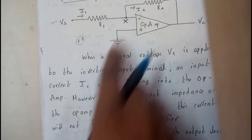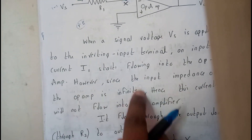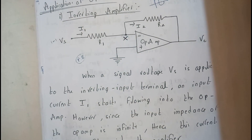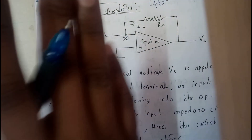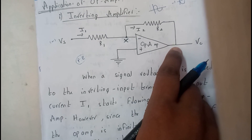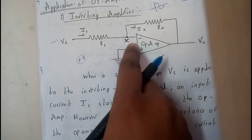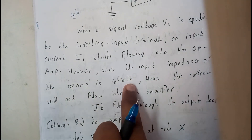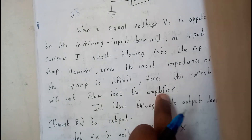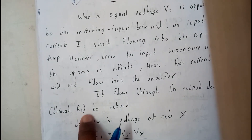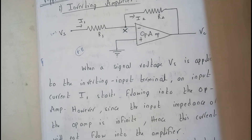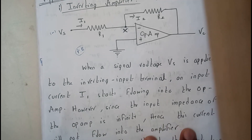However, since the input impedance of the operational amplifier is infinity, the current cannot flow into the amplifier directly. It's like going to a theater and finding the 'house full' board outside — you come back and search for another path. So the current, finding the op-amp input at infinity impedance, travels through the output loop through R2 to the output instead.